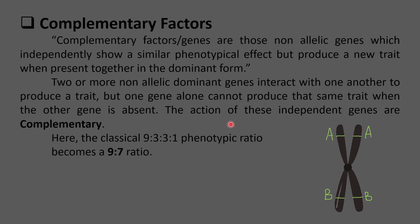Whenever one of these dominant genes is present alone, they produce a similar phenotype. For example, when two dominant genes A and B are present together they produce a new trait, whereas when A and B are present independently they produce a similar phenotypic effect. For example, A can produce a red fruit color and B can produce a red fruit color when present alone, but when they are present together the fruit color can be yellow.